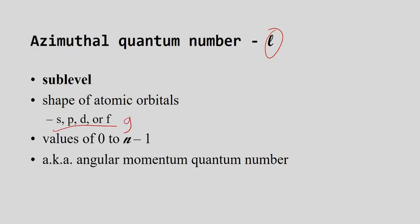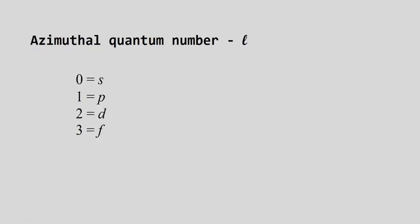Also known as the angular momentum quantum number, but azimuthal quantum number will do for this course. The possibilities are zero through three: S is zero, P is one, D is two, F is three.